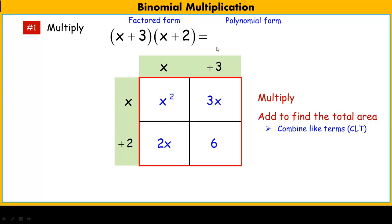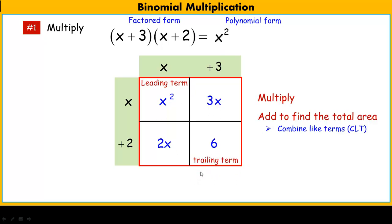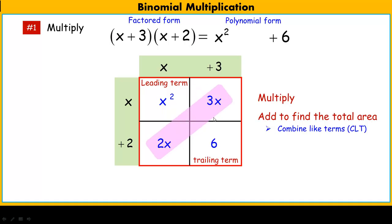Before we start adding, we also want to put this polynomial form into standard form — descending order. The leading term is x squared, the highest order, so we list that first. The trailing term is 6, and we always list that at the end. We have two linear terms left — 2x and 3x — both to the power of 1, so they are like terms and we add them: 2x plus 3x is 5x. So the polynomial form of x plus 3 times x plus 2 is x squared plus 5x plus 6.